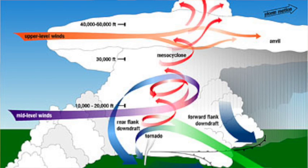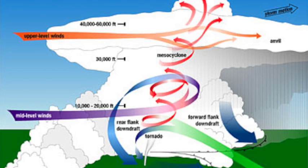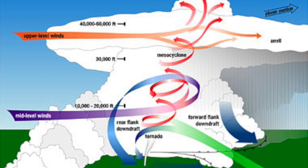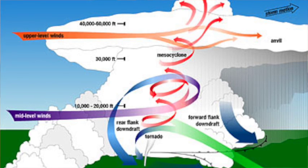So first, right here is a diagram of a supercell thunderstorm. A supercell thunderstorm is basically just a type of thunderstorm that forms from a low-pressure system and gets really, really strong.